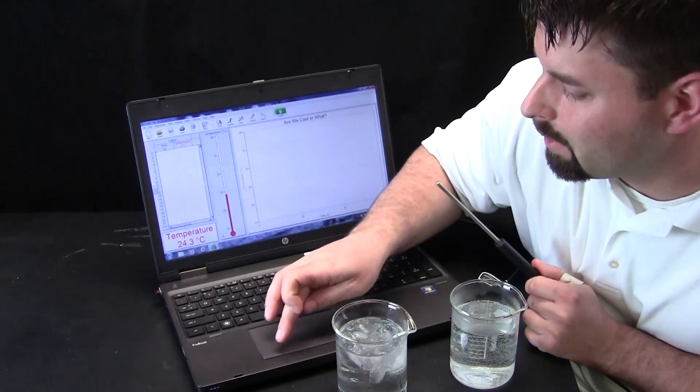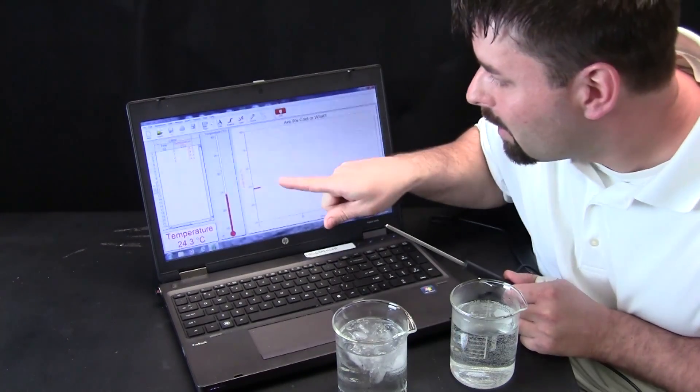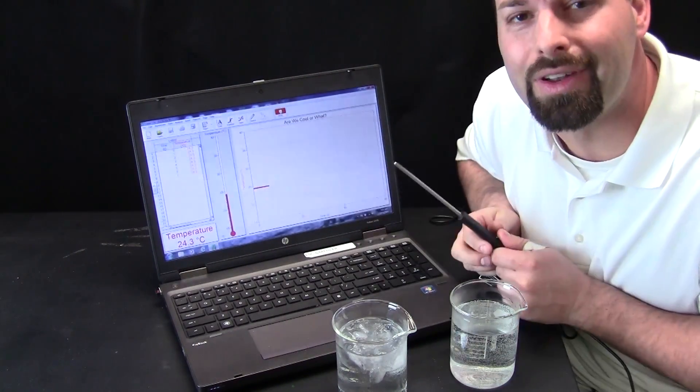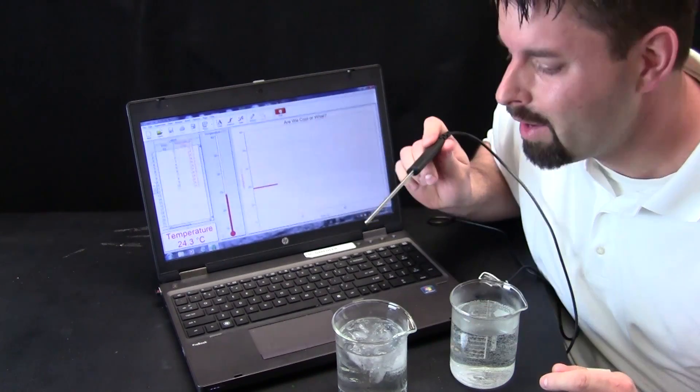So let us get ready to collect. Now you can see my line is sort of, it is flat, it is straight. That means the temperature is nice and even. I wonder what will happen when I put my thermometer in the cup of cold water. Let us watch.